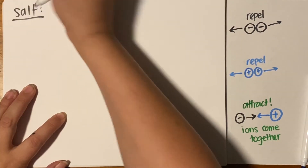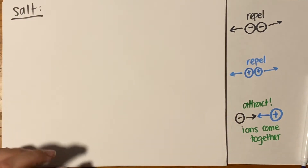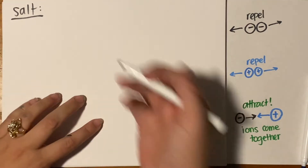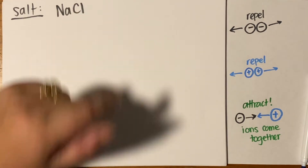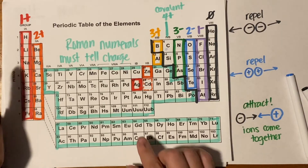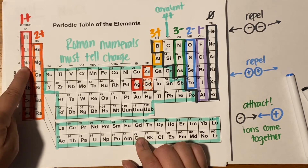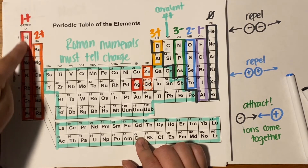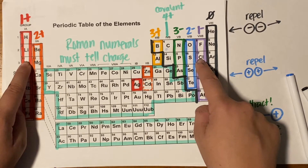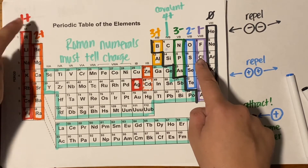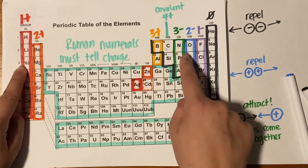This is why it's so important to understand Bohr models beforehand. If we look at regular table salt, sodium chloride — Na bonded to Cl — sodium is on the third period in the first column, so it has three electron shells and one electron in its valence shell. Chlorine, all the way to the right, also has three shells and seven valence electrons.